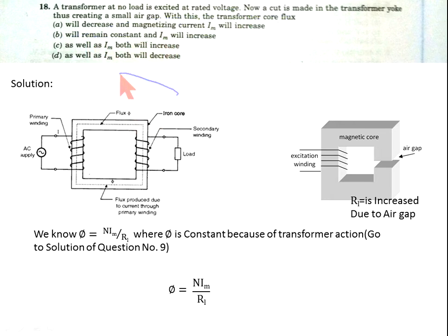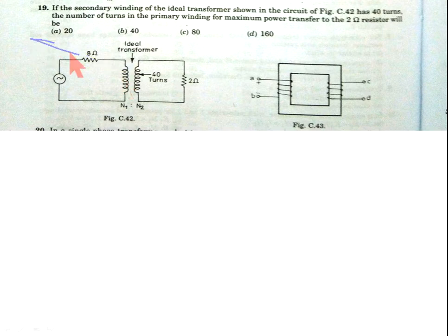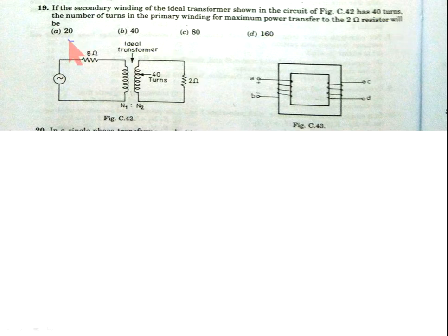Option B is correct. Now come to Question 19. If the secondary winding of an ideal transformer shown in figure C.42 has 40 turns, the number of turns in the primary winding for maximum power transfer to a 2 ohm resistor will be: option A: 20, option B: 40, option C: 80, option D: 116.